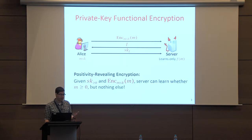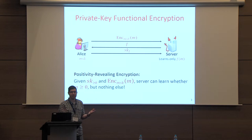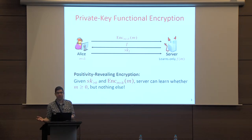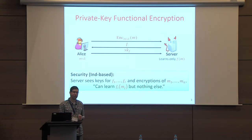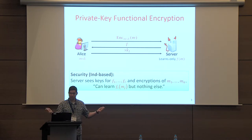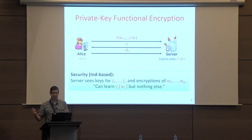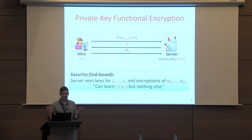It's a very useful notion. Here's a simple example: positivity revealing encryption. As long as the server has only ciphertexts encoding some messages, he doesn't know anything about what's inside. But once Alice generates a key for a function which is just 'greater than zero,' the server can compute whether the encrypted message is greater than zero or not. The security notion we rely on is indistinguishability-based security: the server is given functions f1 to fl and ciphertexts for messages m1 to mk, and can learn fi of mj for any i and j, but nothing else.